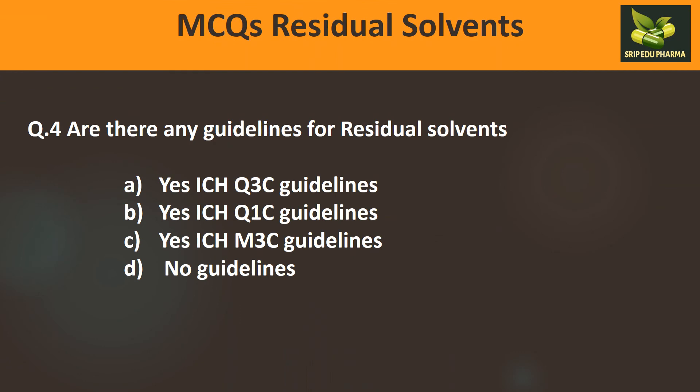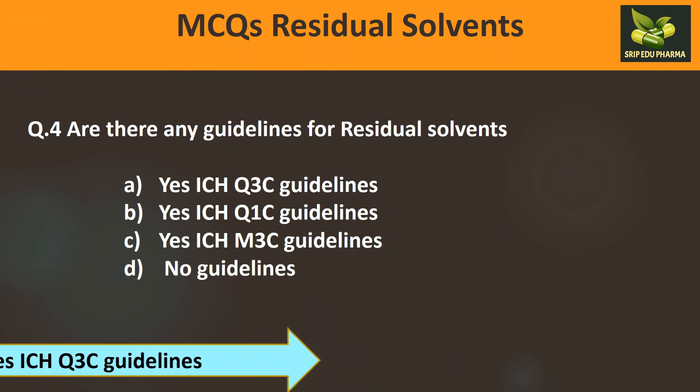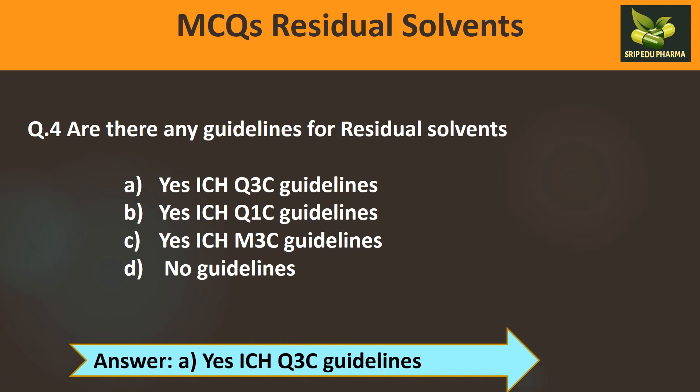Question 4: Are there any guidelines for residual solvents? A) Yes, ICH Q3C guidelines, B) Yes, ICH Q1C guidelines, C) Yes, ICH M3C guidelines, D) No guidelines. As introduced at the start of this lecture, the relevant guidelines are ICH Q3C. Therefore the answer is A.